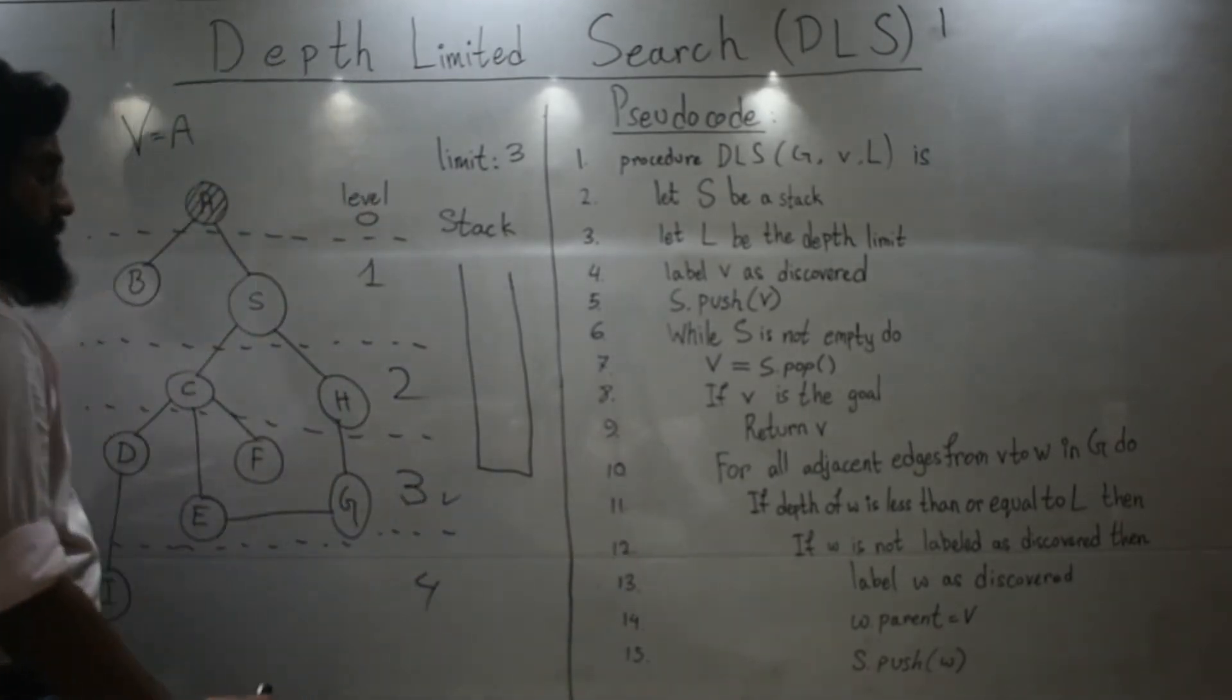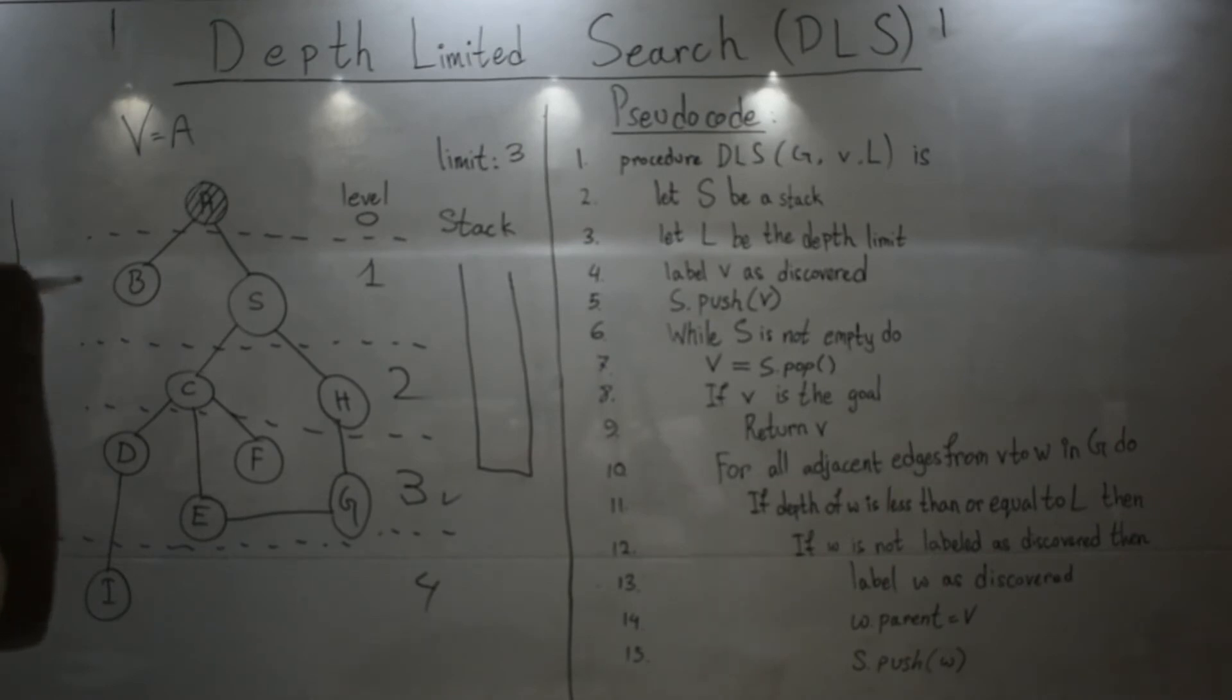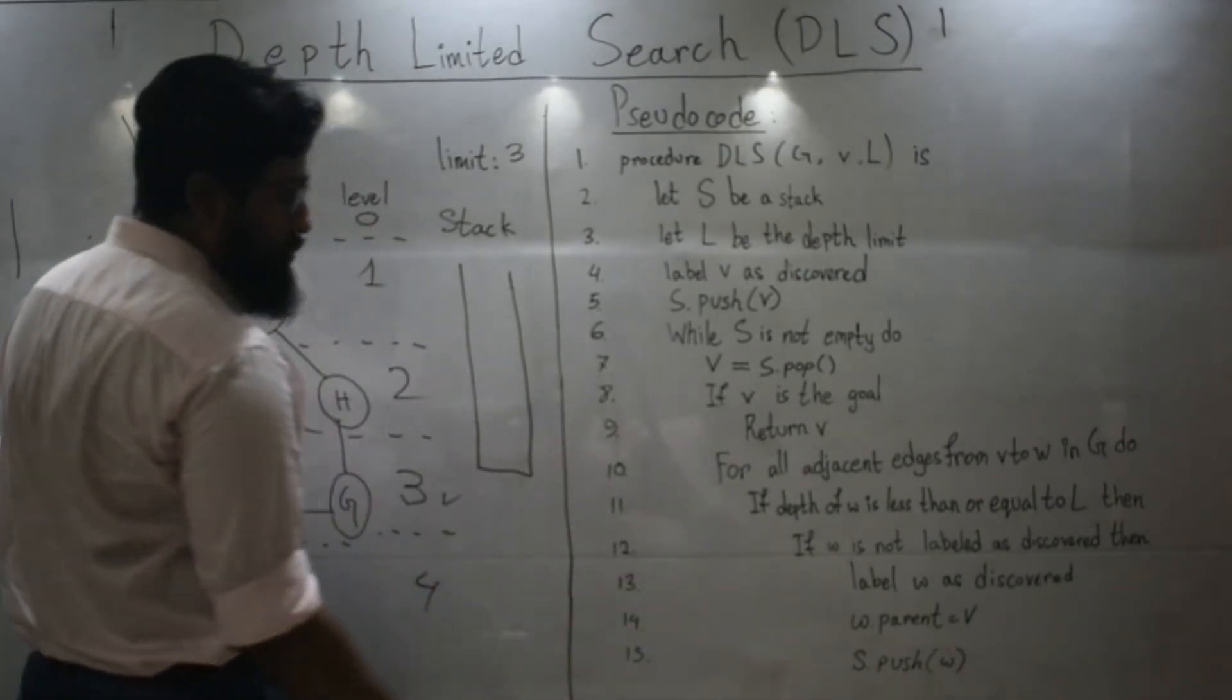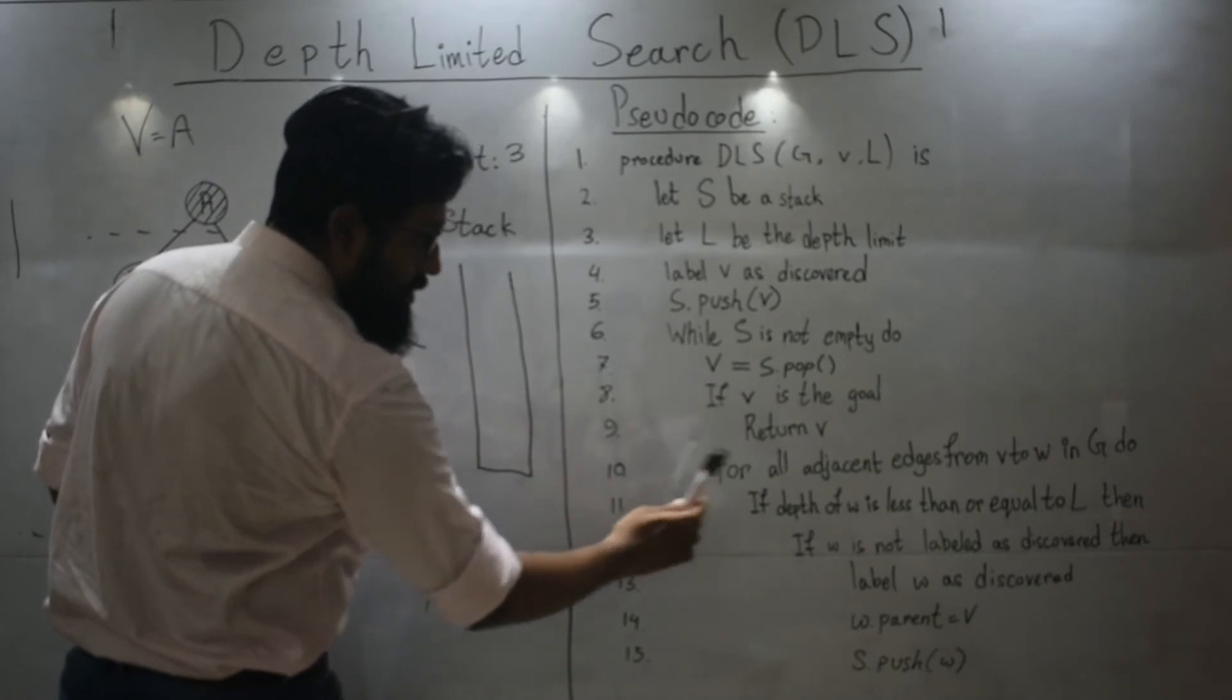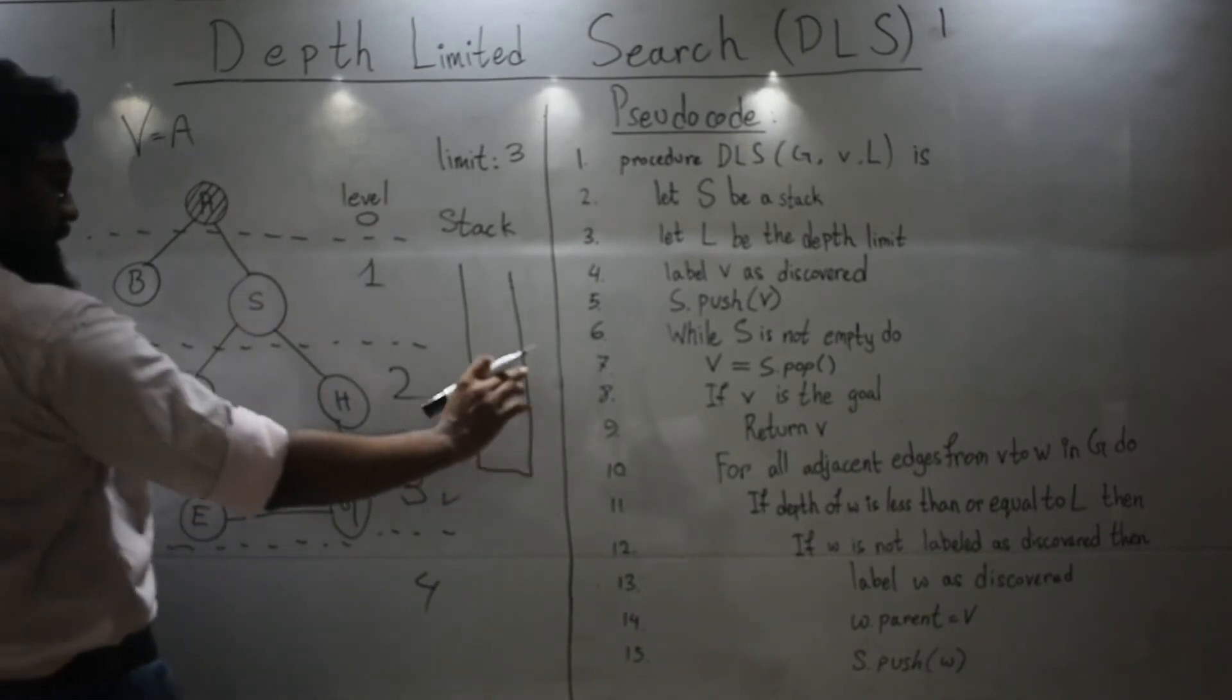So, the next one is, for all adjacent edges from V to W in the graph G. Do, is it within the limit? Yes. And then, is it discovered? Is it not discovered? No. Then let's get in.